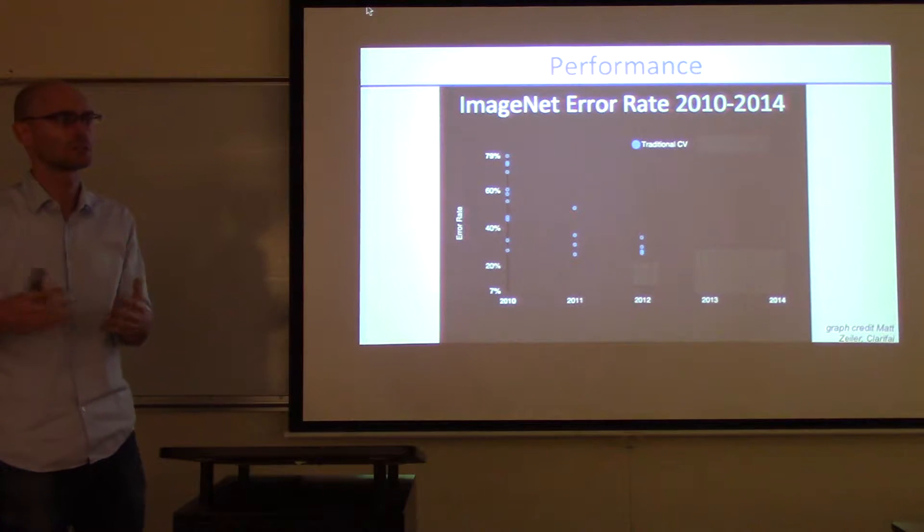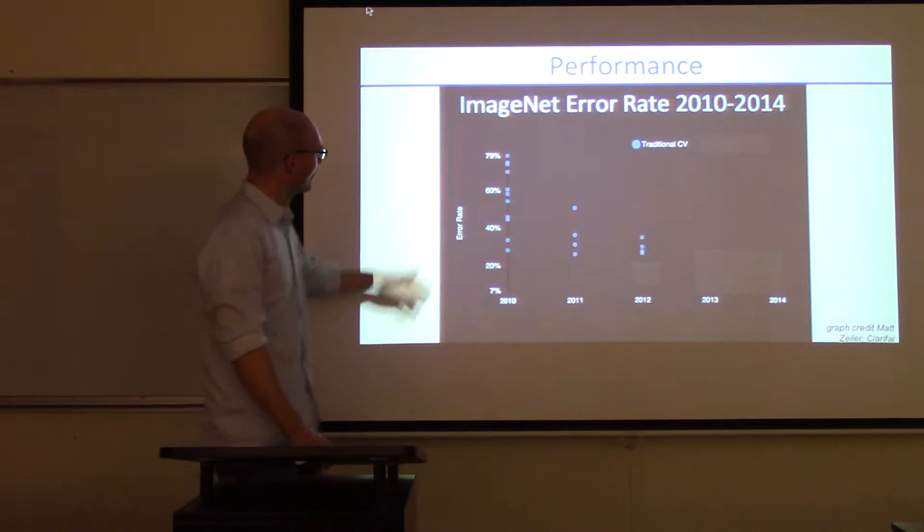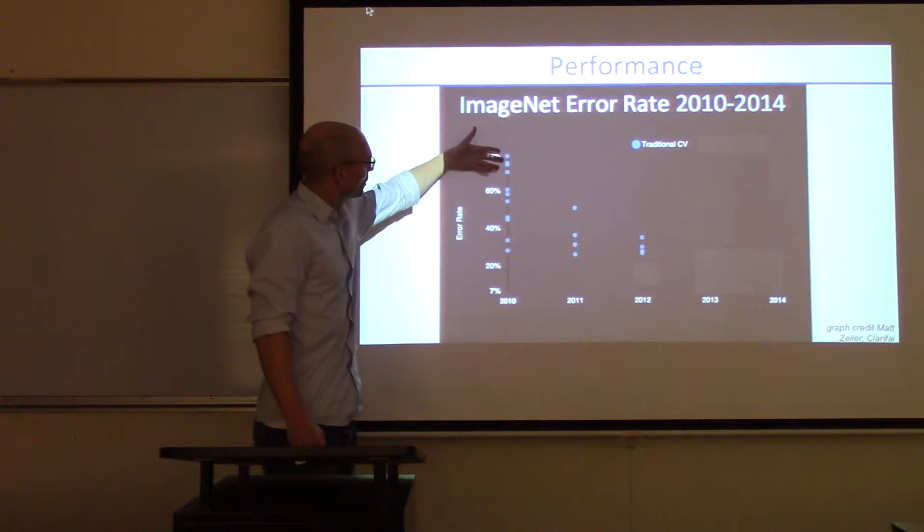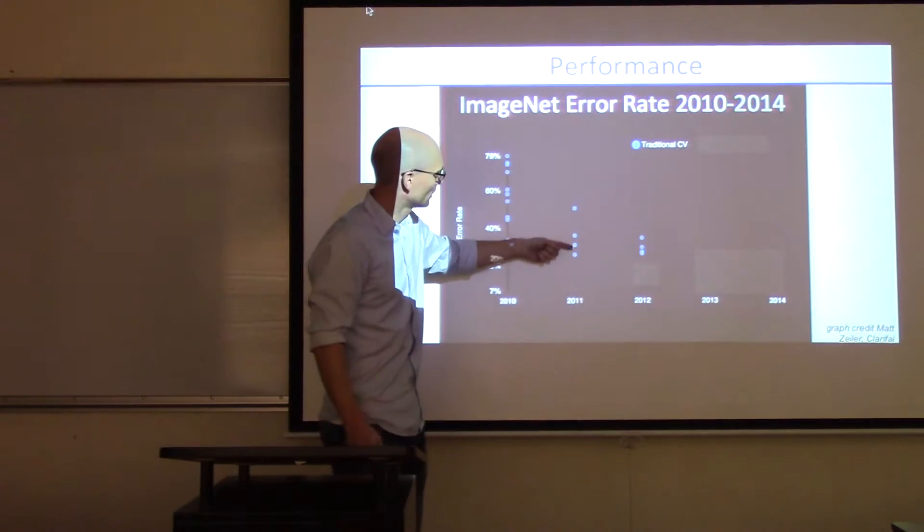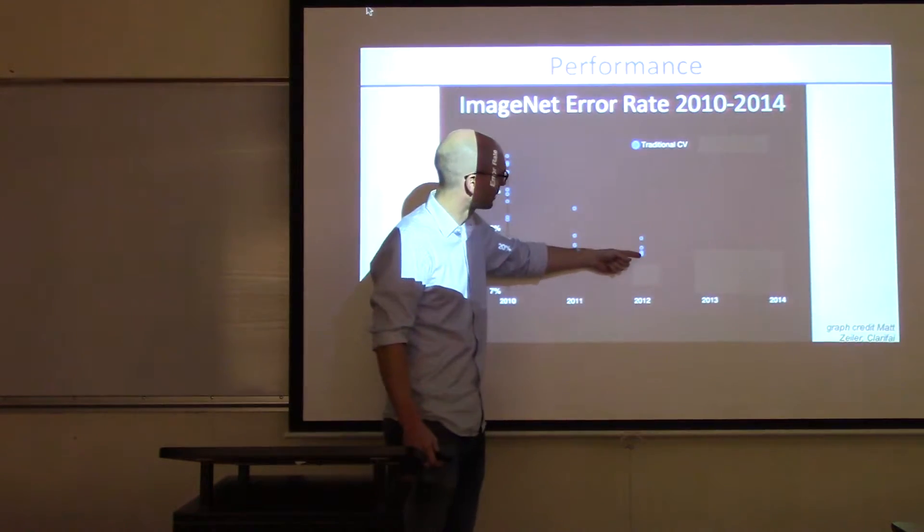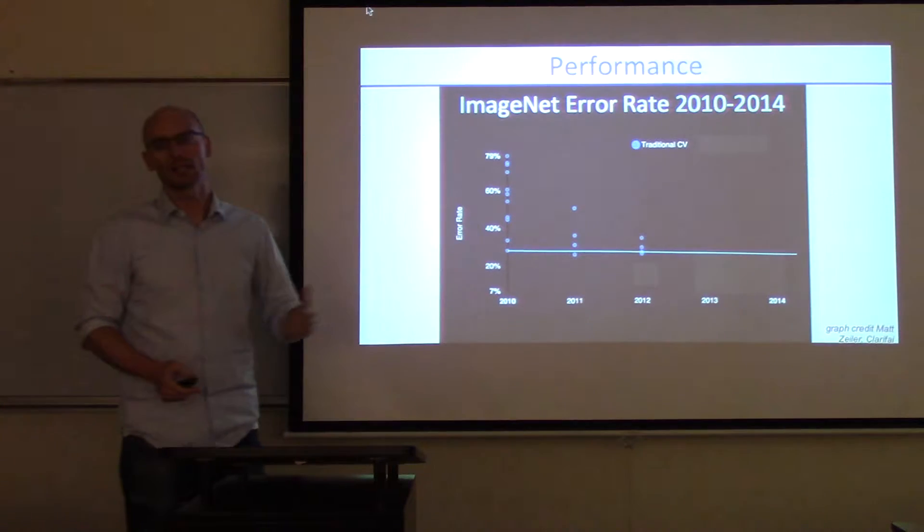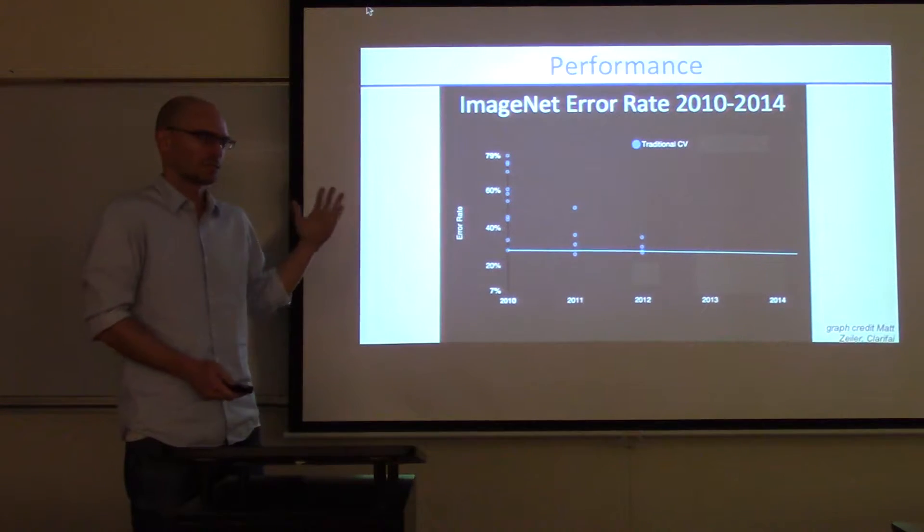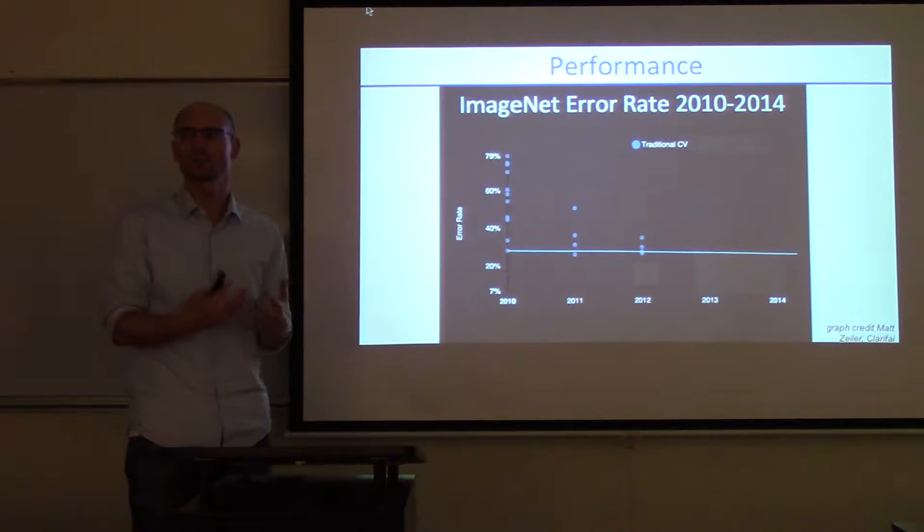Cat, dog, car, and so forth. There's a thousand categories to choose from. Only one of them is right. These are the error rates of different entries in 2010, 2011. If you look at the trend, it's essentially flatlining. Even though a lot of effort was being done, this was and still is one of the most central problems in computer vision.